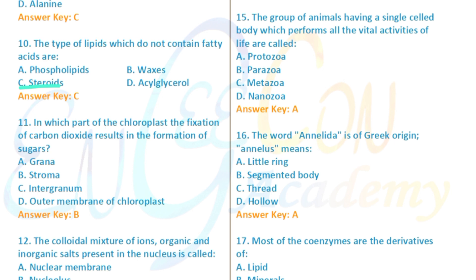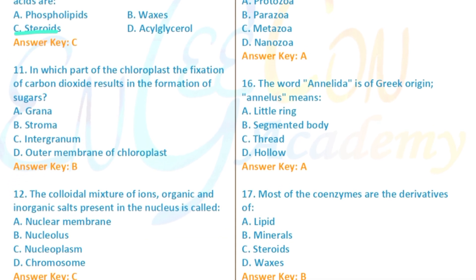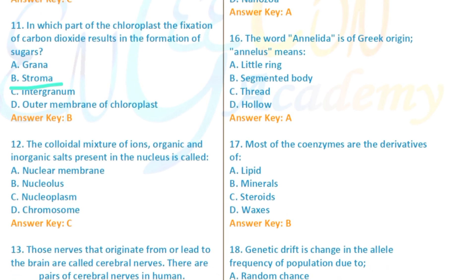Sugar formation occurs in the stroma of the chloroplast. Question: The colloidal mixture of organic and inorganic salts present in the nucleus is called nucleoplasm — nucleoplasm is ticked.